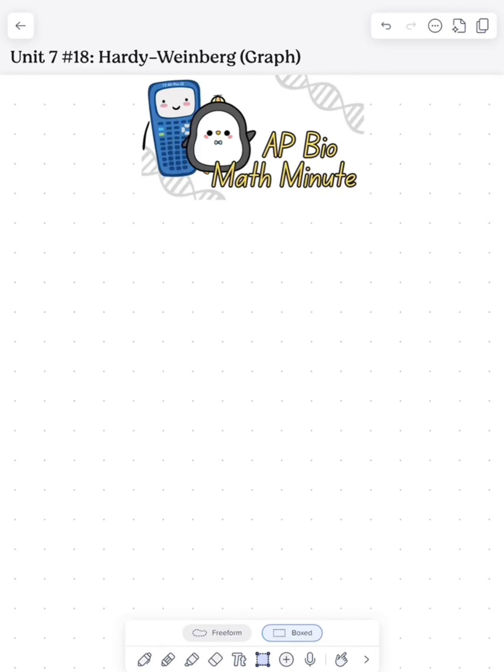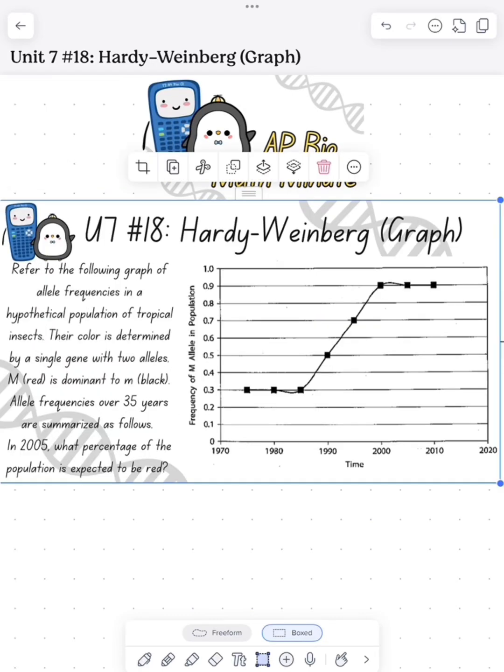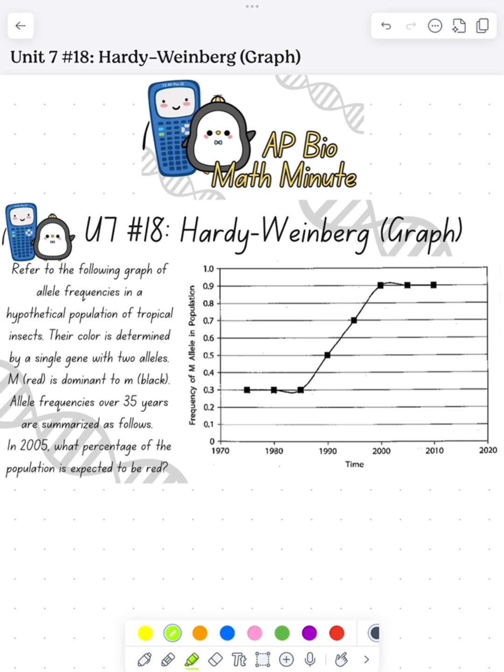What's up, Bob Haynes. Today I'm going to do an AP Bio Math Minute looking at Hardy-Weinberg from a graph. Here we see a graph that shows the allele frequencies of a certain population. We know that the trait is red is dominant over black, and we need to figure out in 2005, what is the percentage of individuals that show the dominant phenotype.